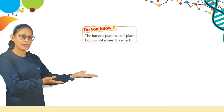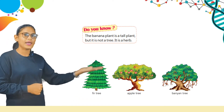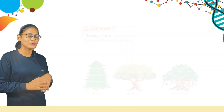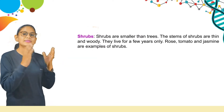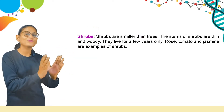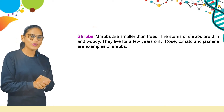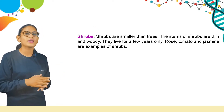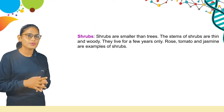Here are some pictures: pear tree, apple tree, and banyan tree. Now, shrubs are smaller than trees. The stem of shrubs is thin and woody. They live for only a few years. Rose, tomato, and jasmine are examples of shrubs.